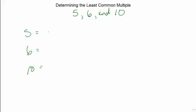So, the multiples of five are five, ten, fifteen, twenty, twenty-five, thirty, thirty-five, forty. I'm just going to stop there.